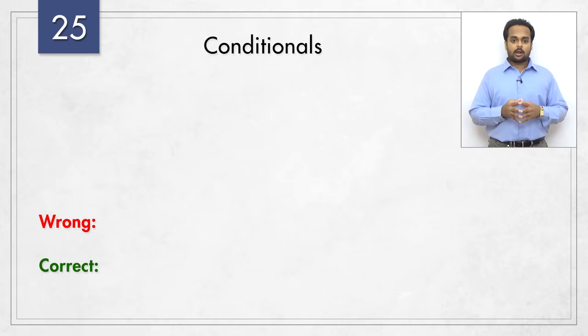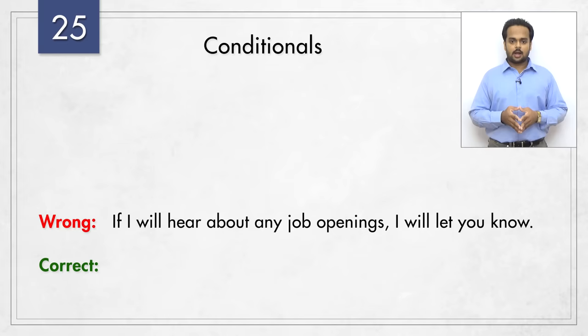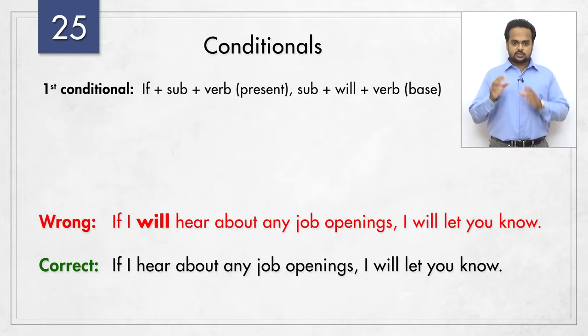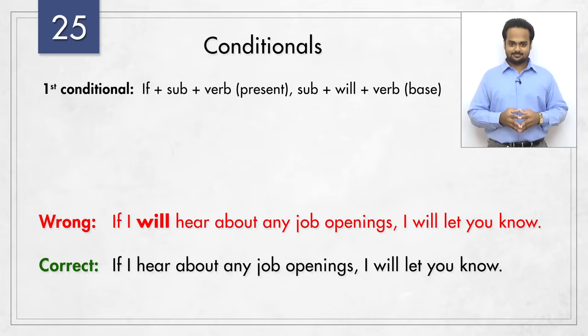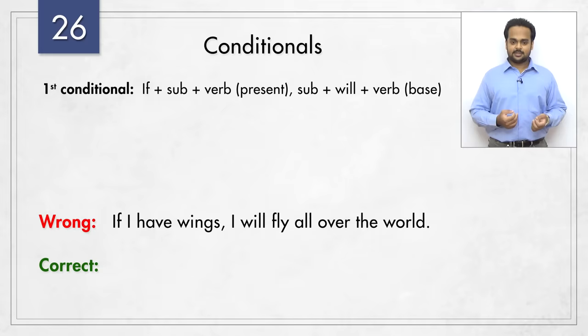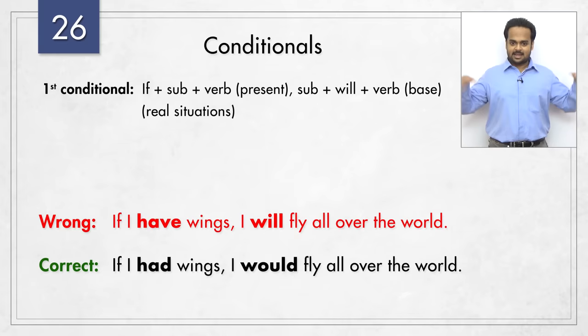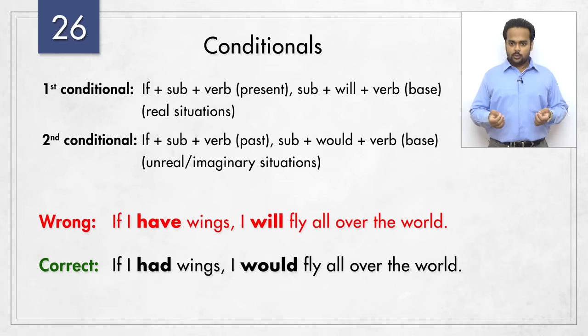Next we look at an area where errors are very common – conditionals. 'If I will hear about any job openings, I will let you know.' The error: it should be 'if I hear about any job openings, I'll let you know.' The first clause is the condition – here we don't use 'will.' We use it in the result – 'I will let you know.' What about 'if I have wings, I will fly all over the world'? It should be 'if I had wings, I would fly all over the world.' The first conditional with present simple in the condition and 'will' in the result is used only for real situations. This situation is not real – I cannot have wings – so it's imaginary. For this, we use the past tense throughout to show it's just imagination.